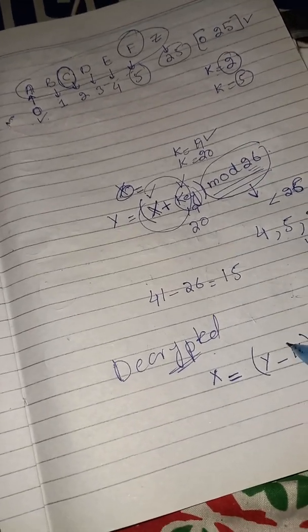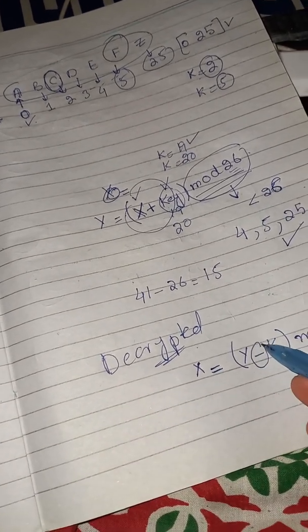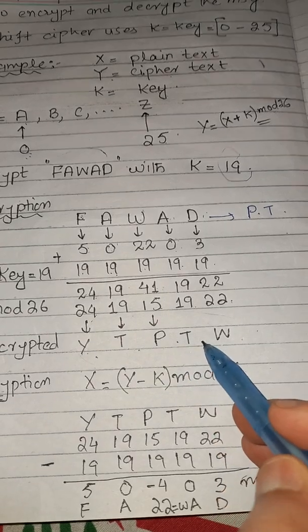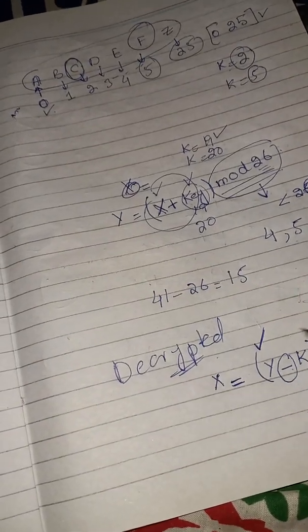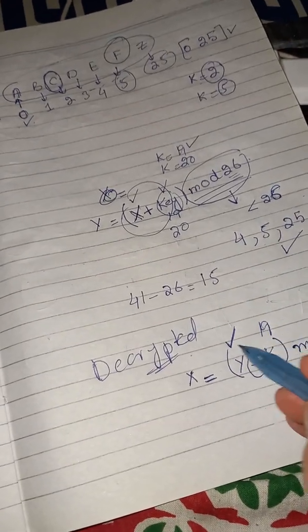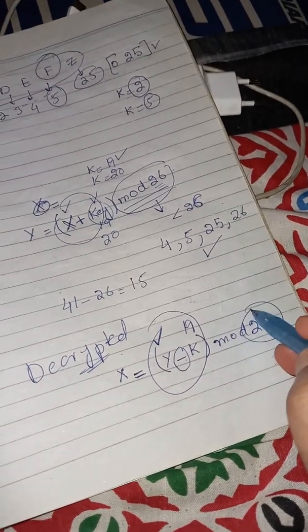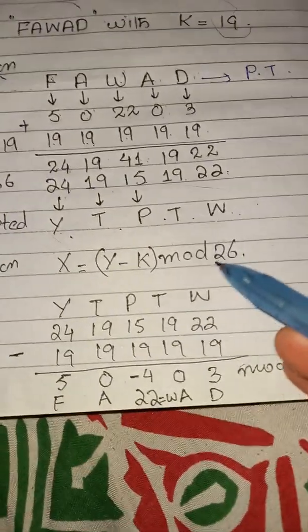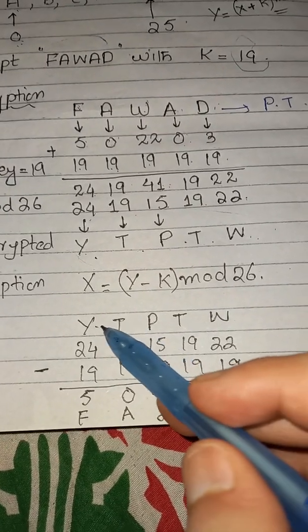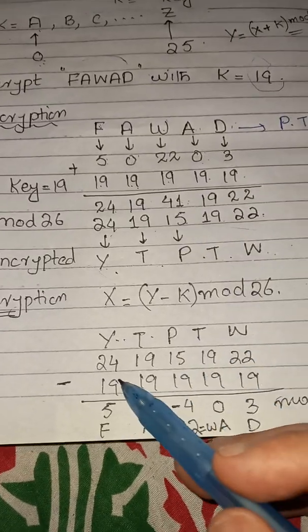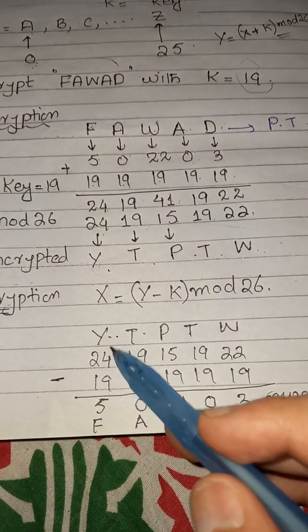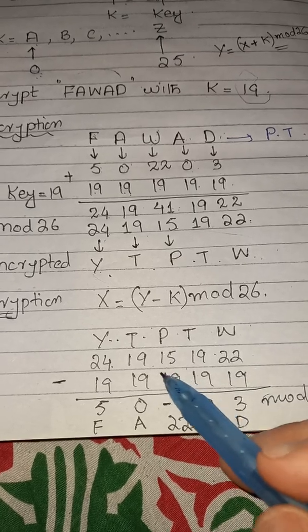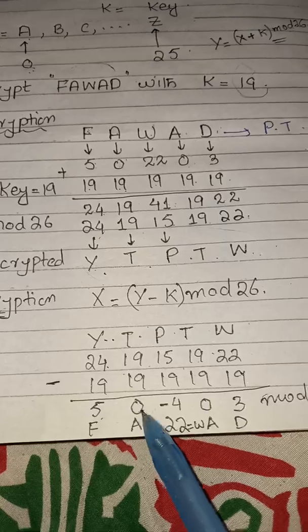We take the ciphertext Y, T, P, T, W and subtract the key 19 from each. Converting to numbers: Y is 24, T is 19, P is 15, T is 19, W is 22. Subtracting key 19: 24 minus 19 equals 5; 19 minus 19 equals 0; 15 minus 19 equals minus 4; 19 minus 19 equals 0; 22 minus 19 equals 3.